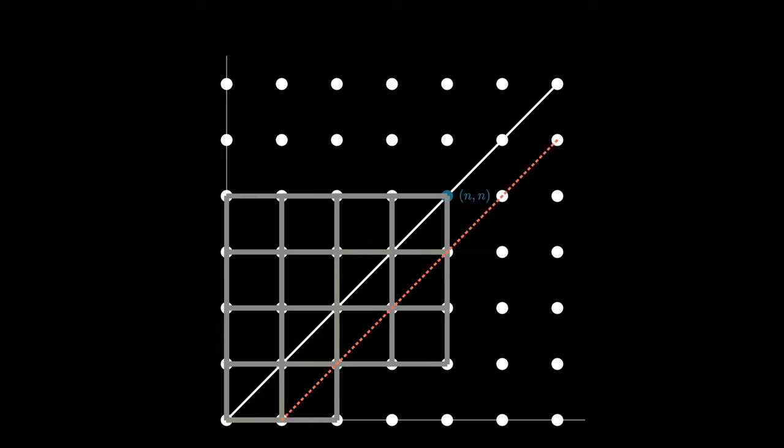Here we do it with all of the paths that we don't want to include in our final count. As we reflect and remove the bad lattice paths, we notice something special about all of these reflections. Look at what happens to the endpoint of these lattice paths.